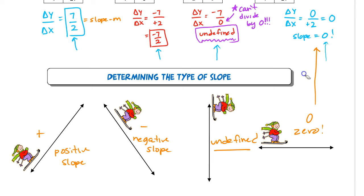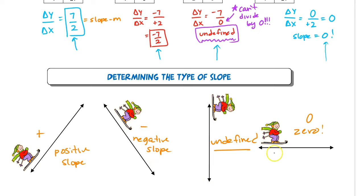So that's the visual representation of the different types of slope: a positive slope means going uphill, a negative slope means going downhill, undefined slope means you're going to crash, and a zero slope means you have no speed — you have to push yourself across the flat hill.